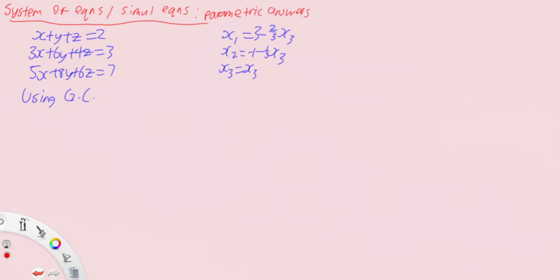So what do you mean by parametric answers? Basically, where you have a common parameter across your variables. So in this case, when we use a GC, we end up having x equals 3 minus 2 over 3x3, x2 equals minus 1 minus 1 over 3x3, and then x3 equals x3. So instead of putting x3 as x3, we can use x3 equals t.